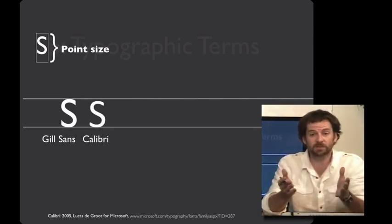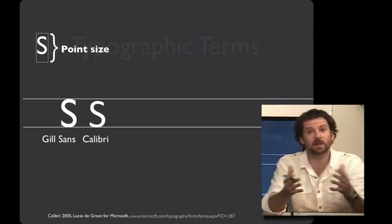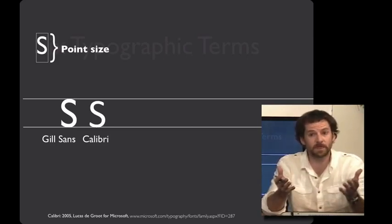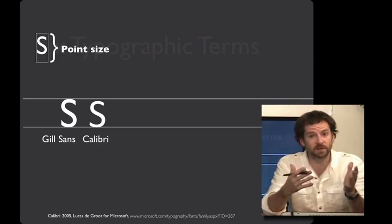For example, you can see for the same point size here's a letter S in Gill Sans and a letter S in Calibri. And you can see that the Calibri S is lower than the Gill Sans S.